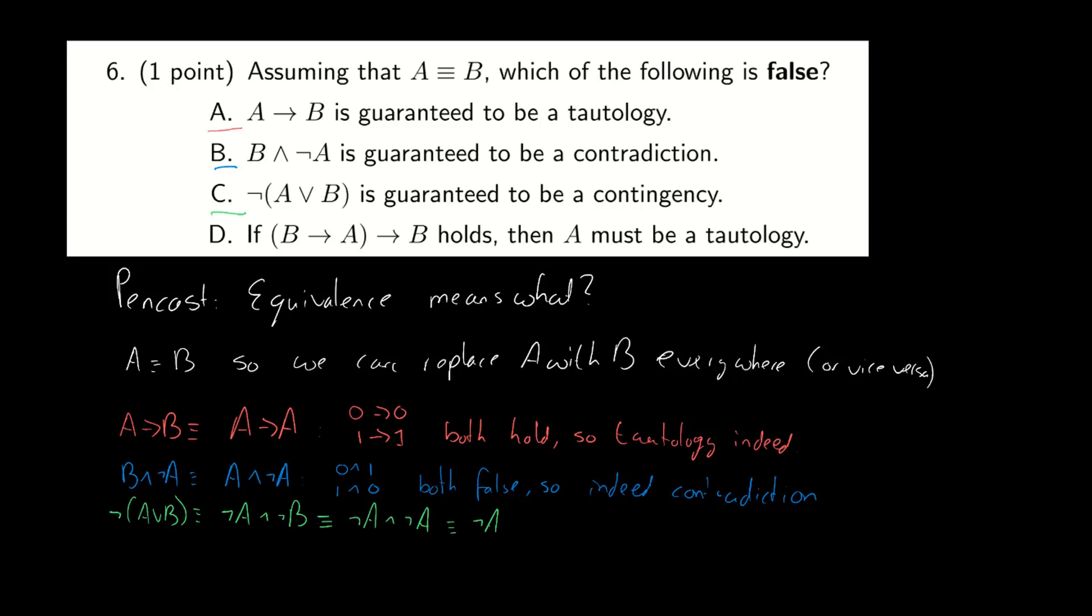But what if A is a tautology? Well in that case not A is going to be a contradiction isn't it? Which means that this answer is false. It means that not A or B isn't guaranteed to be a contingency. When A is a tautology not A or B is actually a contradiction. So this answer is false. So we've already found the right answer. It turned out to be answer C.